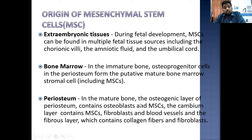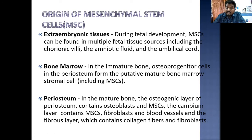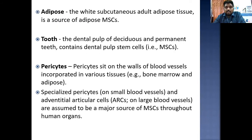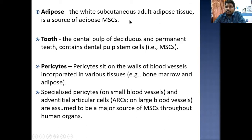In mature bone, the osteogenic layer of the periosteum contains osteoblasts and mesenchymal stem cells. The cambium layer contains mesenchymal stem cells, fibroblasts, and blood vessels. The fibrous layer contains collagen fibers and fibroblasts. Mesenchymal stem cells can also be recovered from adipose tissue — the white subcutaneous adult adipose tissue is also a source of adipose mesenchymal stem cells.